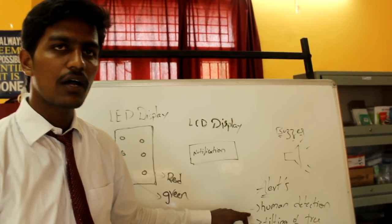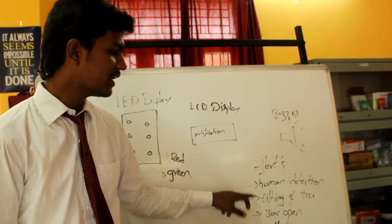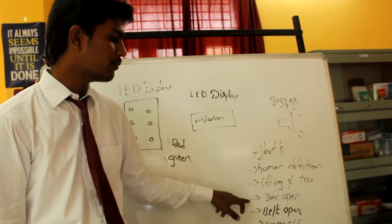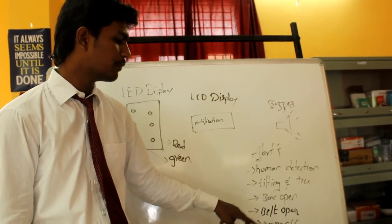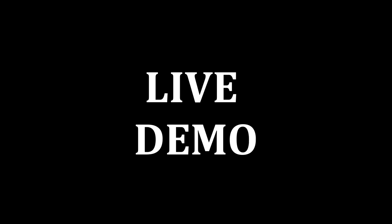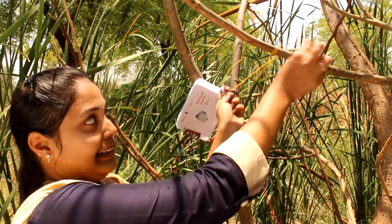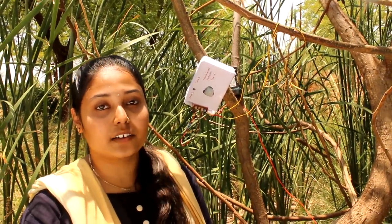The alerts we are going to get in this project are: human detection, tilting of tree, box open, and belt open. When a person tries to open the belt, an SMS alert will be sent to forest officials, the buzzer will be activated, and the green light will change to red.